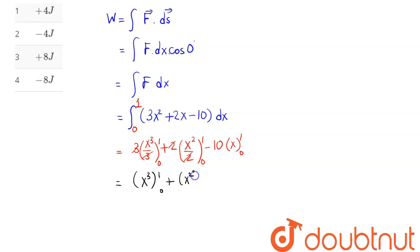With here this is x squared limit as 0 to 1 and this is minus 10x limit as 0 to 1. Hence this comes as 1 cube minus 0 cube plus 1 square minus 0 square minus of 10 into 1 minus 0, hence this is 1 plus 1 minus of 10 which is 2 minus 10 which is minus 8 joule.